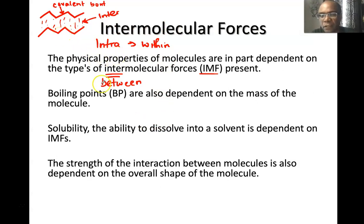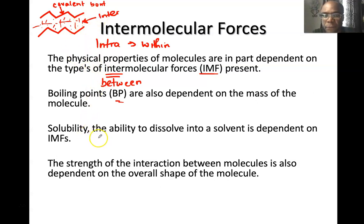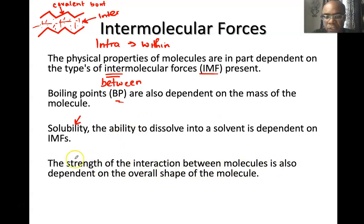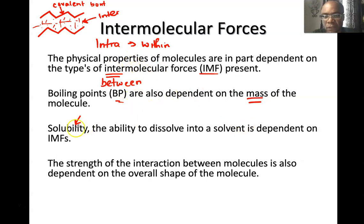Whenever you're boiling alkanes or organic compounds, it's these intermolecular forces that you're breaking to pull the two molecules apart. The boiling point is also dependent on mass — the bigger the molecule, the more the intermolecular forces, and the higher the boiling point. Intermolecular forces in conjunction with intramolecular forces also dictate the solubility of the molecule. The strength of interaction between molecules is also dependent on the shape of the molecule, which in turn dictates boiling points.